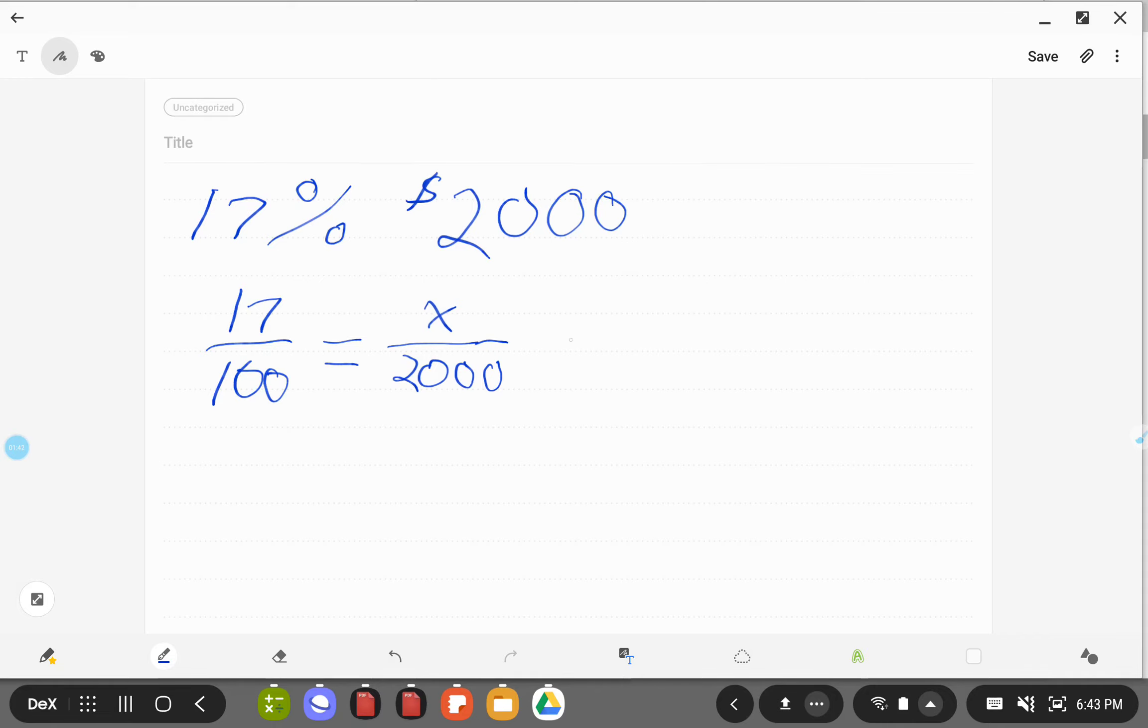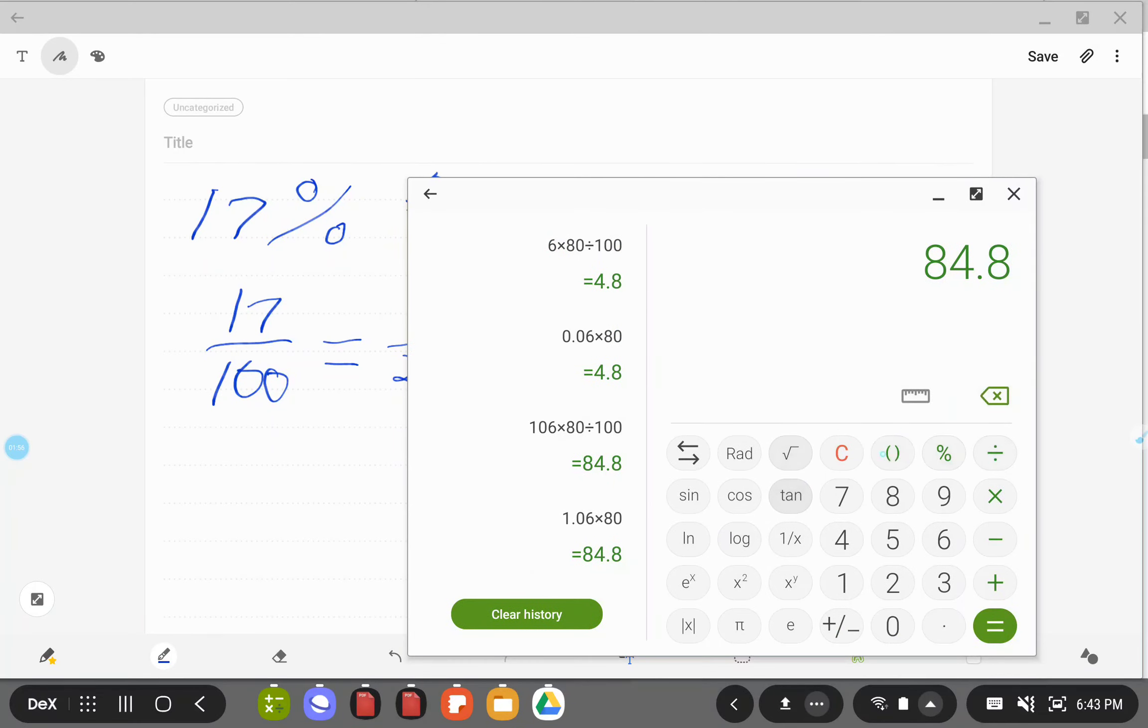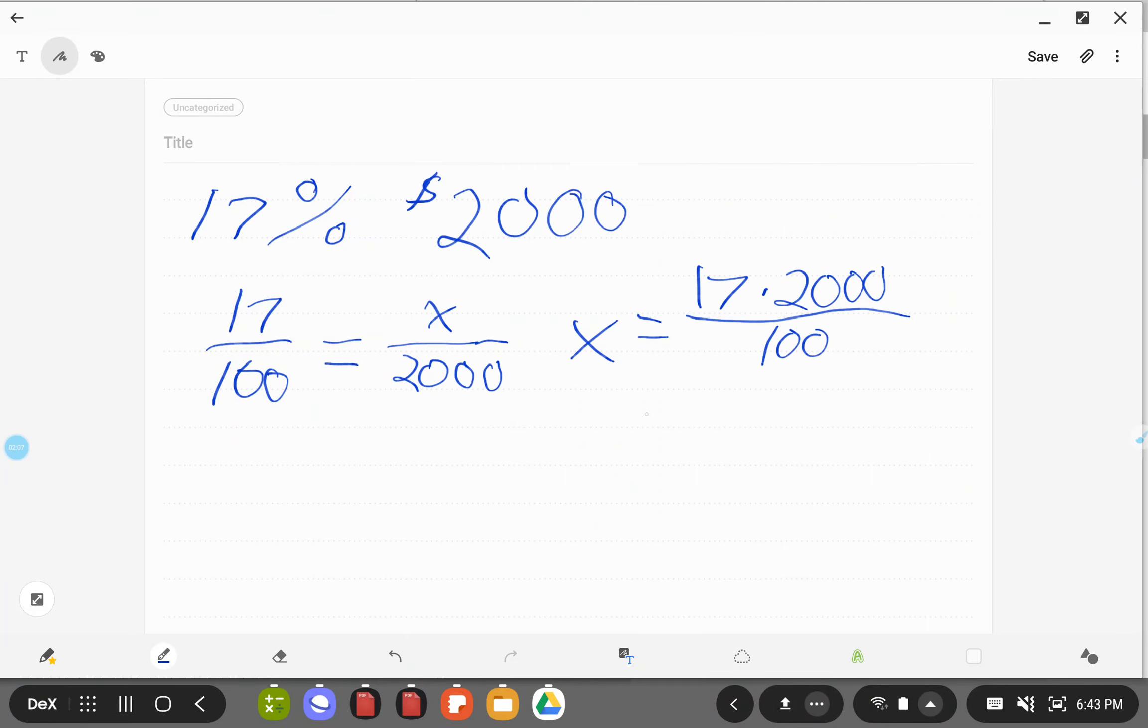It equals the 100%. So to figure it out that way, we would do X equals, we'd multiply our opposite corners, 17 times 2000, divide that by 100. And then that would give us 17 times 2000 divided by 100. That would give us $340. So what does the $340 represent? In this case, the $340 represents the 17%, because they were on the same row together.